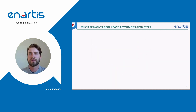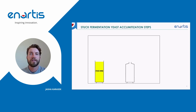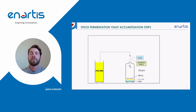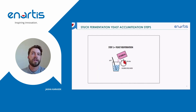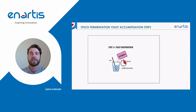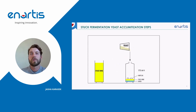Here are the steps for a yeast acclimatization. You start with your stuck wine and a tank of equal or larger volume. Add a little water and some inert gas to the empty tank, then add an equal volume of stuck wine, some nutrient, and sugar into that second tank. Then rehydrate a fresh yeast population — generally something with higher alcohol tolerance and fructophilic, able to handle fructose levels, such as our Easy Firm 44 or Firm WS. Add that yeast into the stuck wine, water, nutrient, and sugar mixture to create a yeast starter.